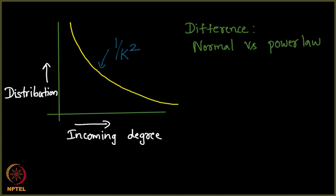What is the difference? See, initially you saw, we plotted 2 graphs, one was normal, one was power law. What is the huge difference between these 2 things? What does power law tell us which normal distribution did not?